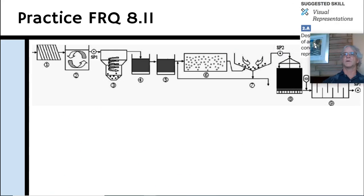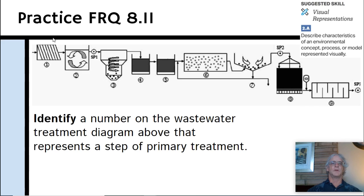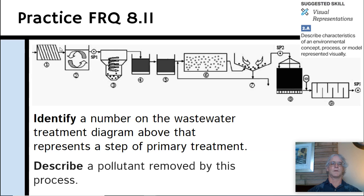Here's the FRQ: Looking at a sewage treatment plant diagram, can you identify a number on the wastewater treatment diagram that represents a step of primary treatment? And two, can you describe a pollutant removed by this process? Thank you, and I hope this was helpful.